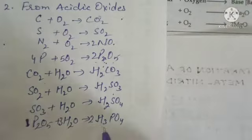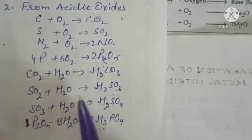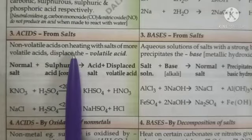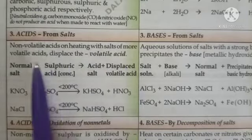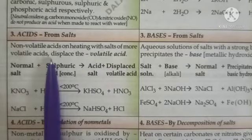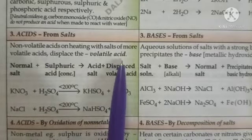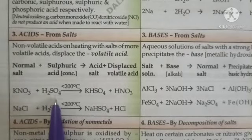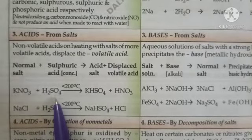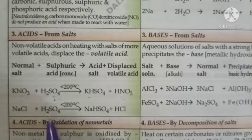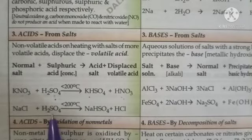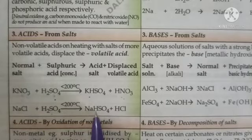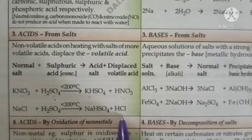When phosphorus pentoxide (P₂O₅) reacts with water, it gives phosphoric acid. Third, volatile acids can be formed from non-volatile acids when they are heated with salts. For example, concentrated sulfuric acid reacting with sodium chloride gives sodium bisulfate and hydrochloric acid gas.